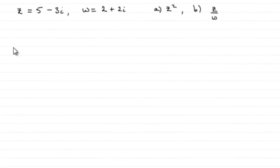Now in this question we've got two complex numbers z equals 5 minus 3i and w equals 2 plus 2i, and we've got to work out what z squared is and in part b, z divided by w. So let's start with part a.